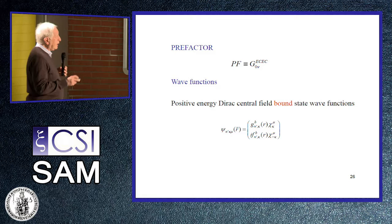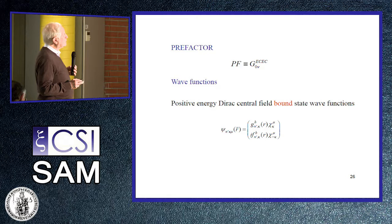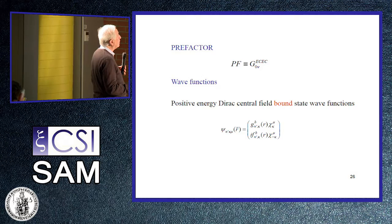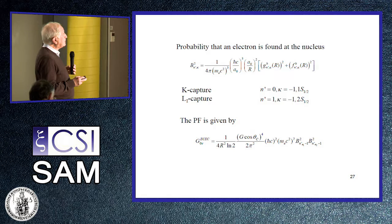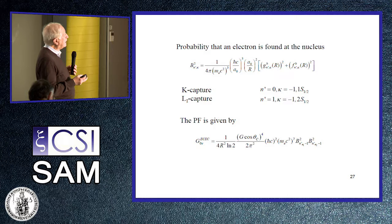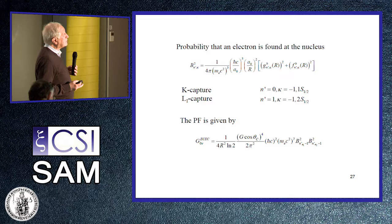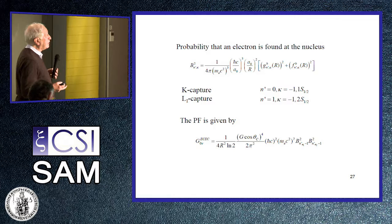All the information is contained in the so-called pre-factor, analogous to the phase-space factors. For that, we need positive-energy Dirac central-field bound-state wave functions calculated numerically. The crucial quantity is the probability that an electron is found at the nucleus. This probability involves various constants and then the square of the Dirac wave functions at the location of the nucleus — the square of the upper component and the square of the lower component — and this must be calculated numerically.